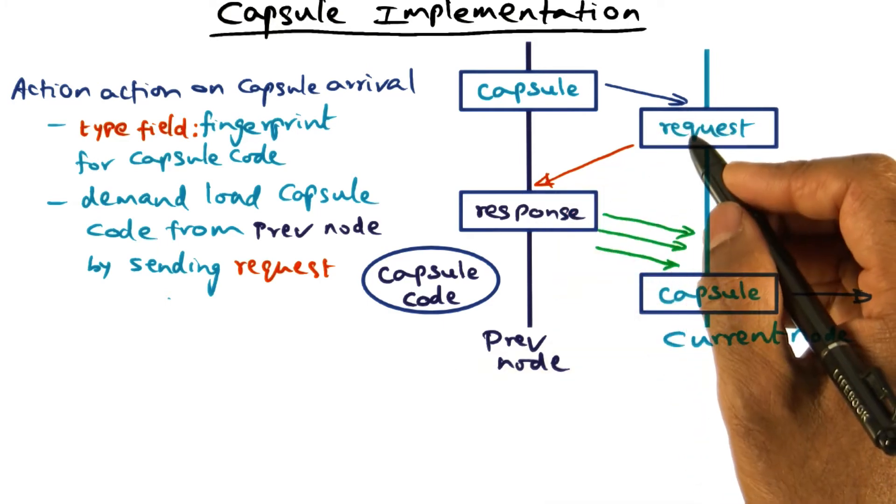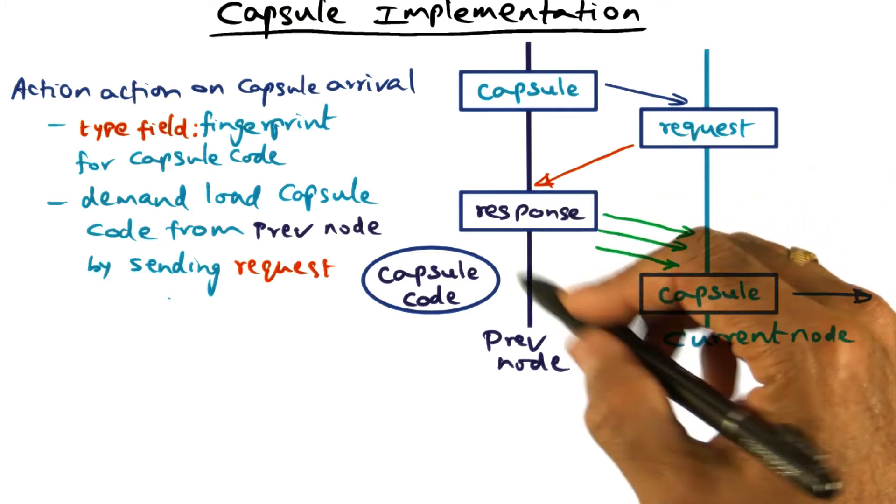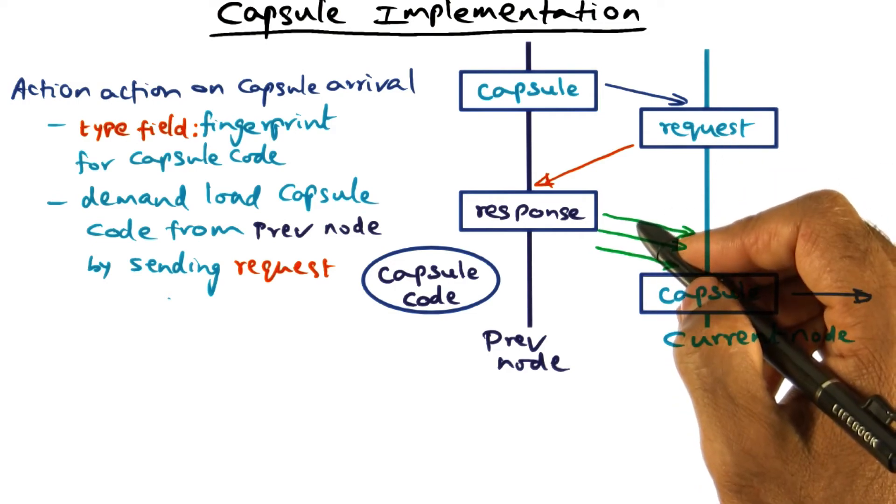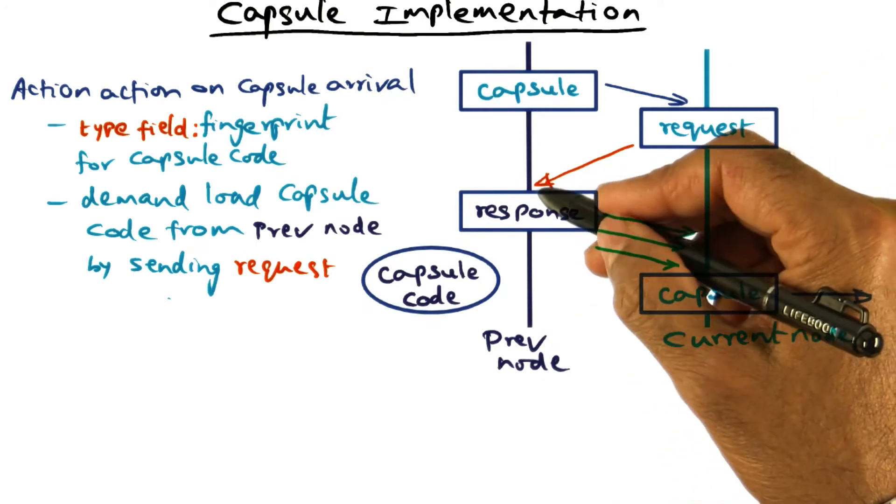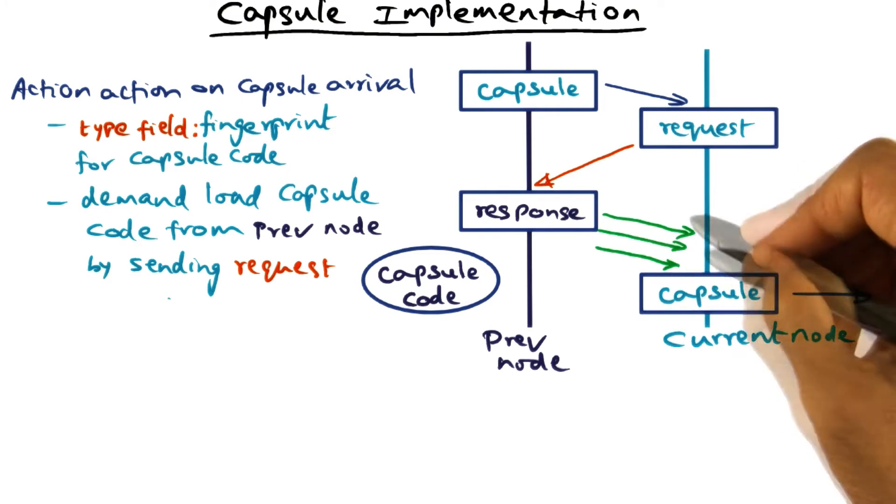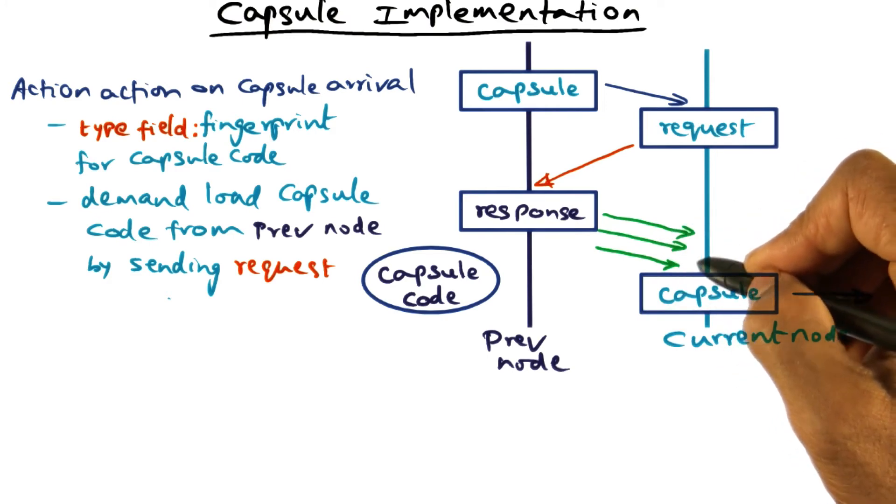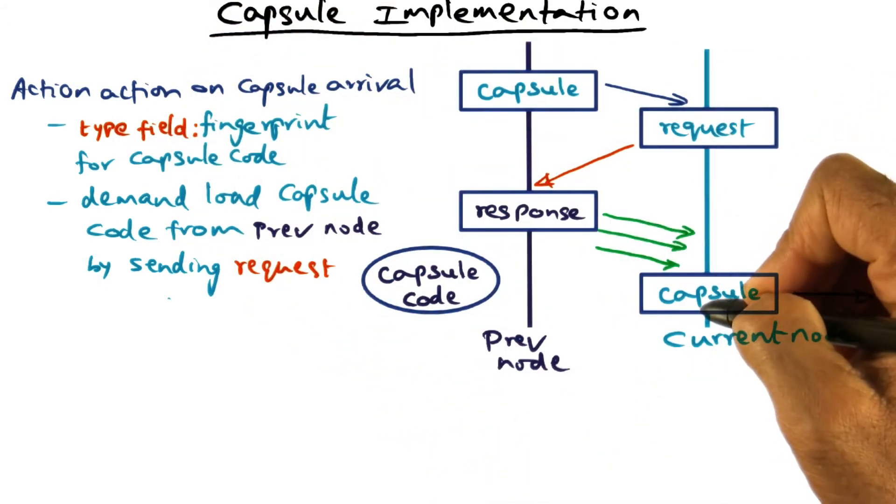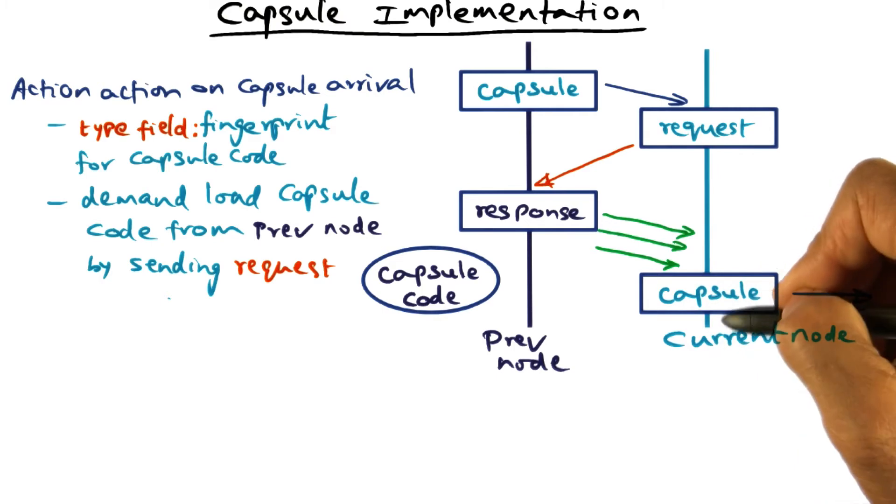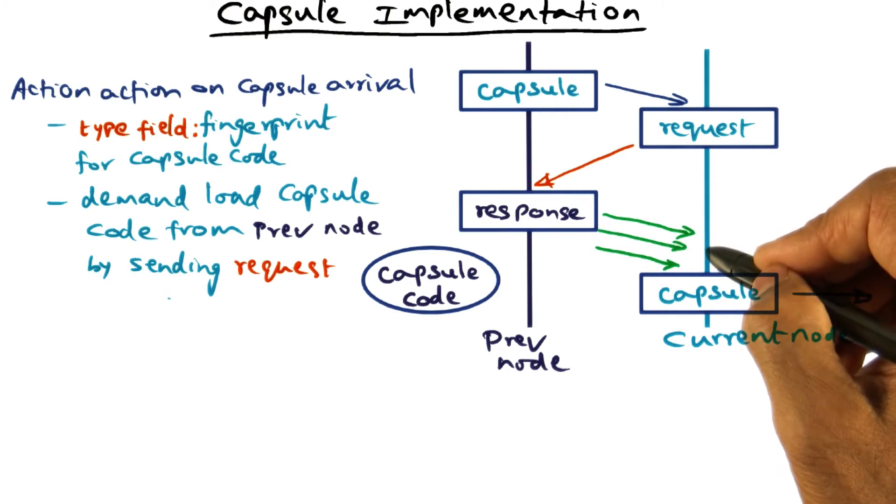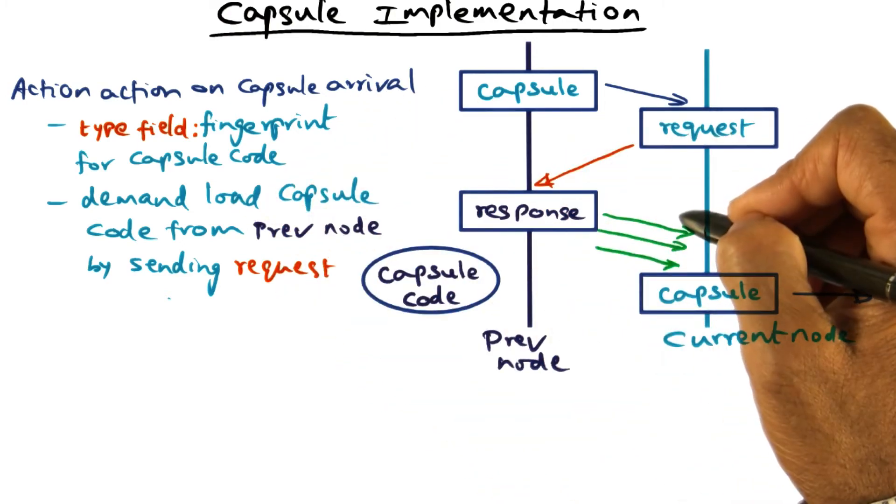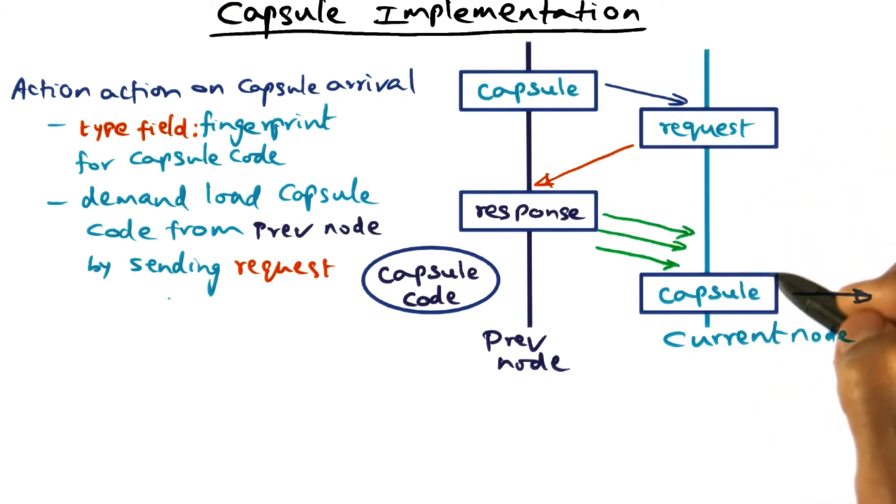One concern that we may have is, how do I believe that the code that I got from the previous node is actually the code that corresponds to this type or not? Well, this is where the cryptographically strong fingerprint comes into play. What this node is going to do is, when it retrieves the code from the previous node, and when the code arrives, it is going to compute the fingerprint of the code that it just got and see if that fingerprint matches the type field of the capsule. If it does, then it knows that this code is genuine. If it is not, then obviously somebody is trying to spoof my node by giving bogus code, so I'm going to reject it. So code spoofing can be avoided by having a fingerprint that is cryptographically strong so that I can recompute the fingerprint, match it against the type, and know that the demand loaded code that I got is actually the code that is associated with this particular capsule.